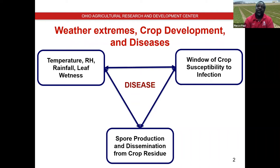I'm going to take a slightly different look at the disease triangle today by looking more at the interaction among these three pieces. Weather not only affects disease directly — it affects how it interacts with crop growth and development. Once you've got weather extremes, it's going to affect crop growth and development, and by virtue of that, it can make the crop susceptible for a longer period or less susceptible depending on the disease. I'll focus on the effect of weather on the window of susceptibility to Gibberella ear rot.